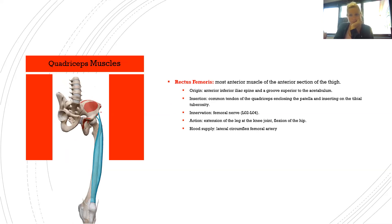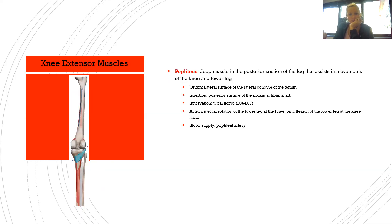The rectus femoris is the most anterior muscle of the anterior thigh. Origin: anterior inferior iliac spine and a groove superior to the acetabulum. Insertion: common tendon of the quadriceps including the patella and tibial tuberosity. Innervation: femoral nerve L2–L4. Action: extension of the leg at the knee joint and flexion of the hip. Blood supply: lateral circumflex femoral artery.